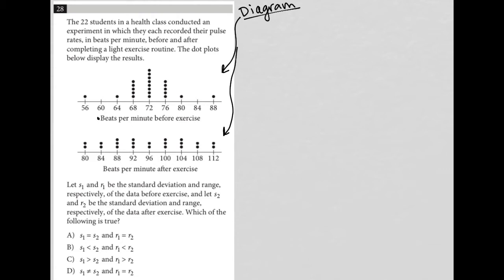So we have beats per minute before exercise. And I would assume then that each of these dots represents a beat. So 56 happened once, 64 happened once, 68 happened one, two, three, four, five times. But I could be wrong, so I'm going to just keep that in mind. I'm just assuming that I understand what this is all about before reading.